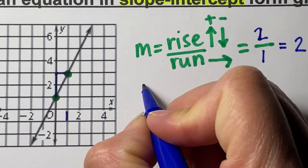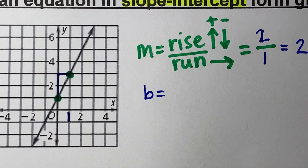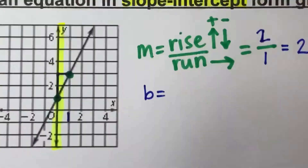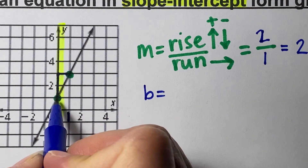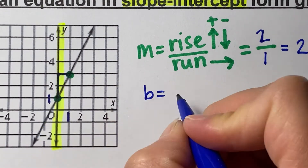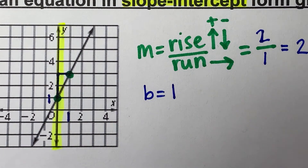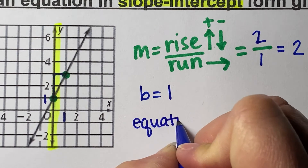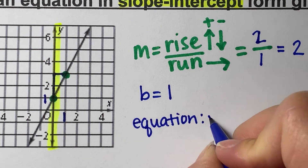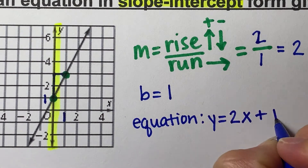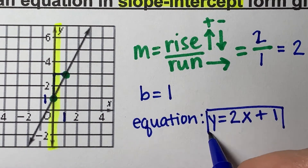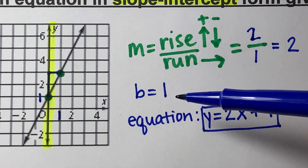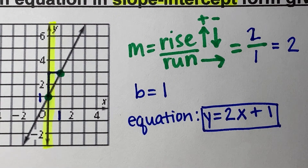Now let's find b, which is the y-intercept. Anytime you need to find b or the y-intercept, you want to focus on looking at the y value where it crosses on the y-axis. Here, you can see it crosses at positive 1. So if m is positive 2 and b is 1, I can write my equation as y equals 2x plus 1. We had to take the steps of finding the slope first and then identifying the y-intercept, and then we can write our equation in y equals mx plus b form.